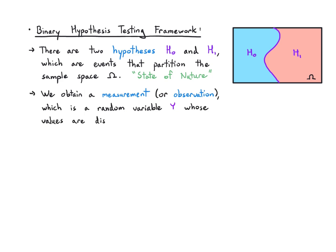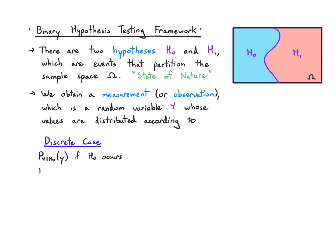The random variable could be distributed according to one of the following models. In the discrete case where y is discrete, we either have a conditional PMF if h0 occurs or a different conditional PMF if h1 occurs — py given h0, or py given h1. In the continuous case it's the same thing, but now we have PDFs instead of PMFs.